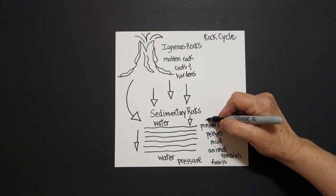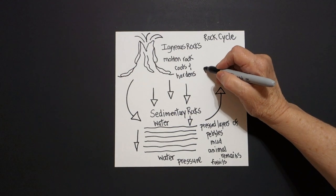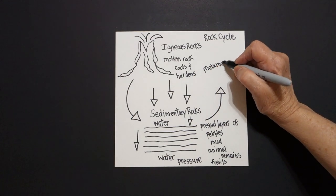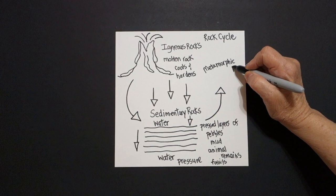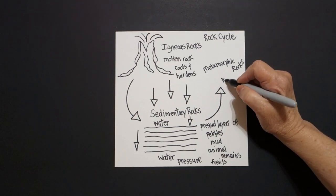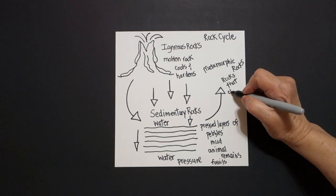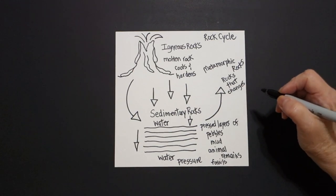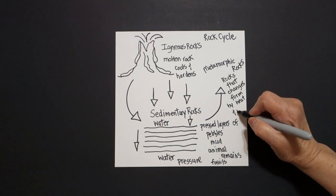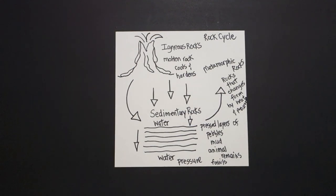Now we're going to draw another curved line up and another triangle, because now we're going to talk about metamorphic rocks. They're the reason why we call this a rock cycle, because metamorphic rocks are rocks that change form by heat and pressure. Pressure. Metamorphic rocks.